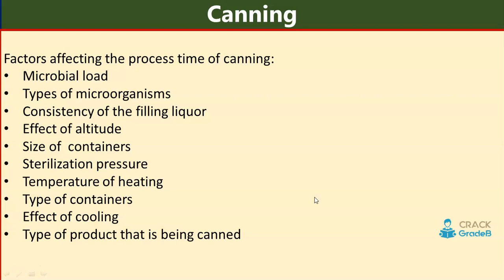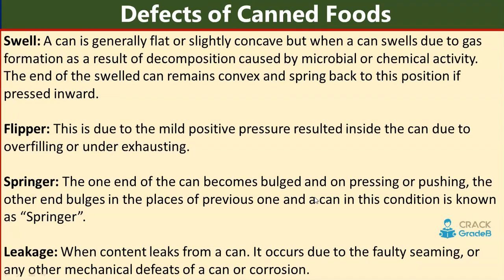Defects of canned foods: Swell — a can is generally flat or slightly concave, but when it swells due to gas formation from microbial or chemical activity, the end remains convex and springs back if pressed inward. Flipper — due to mild positive pressure from overfilling or under-exhausting. Springer — one end of the can becomes bulged, and pressing it causes the other end to bulge in its place. Leakage — contents leak due to faulty seaming, mechanical defects, or corrosion.